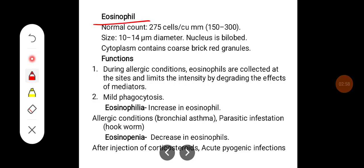Eosinophil normal count is around 275 cells per cubic millimeter of blood, can range between 150 to 300. Size is around 10 to 14 micrometers in diameter, slightly larger than neutrophil. Nucleus is bilobed. Cytoplasm contains coarse brick red granules.